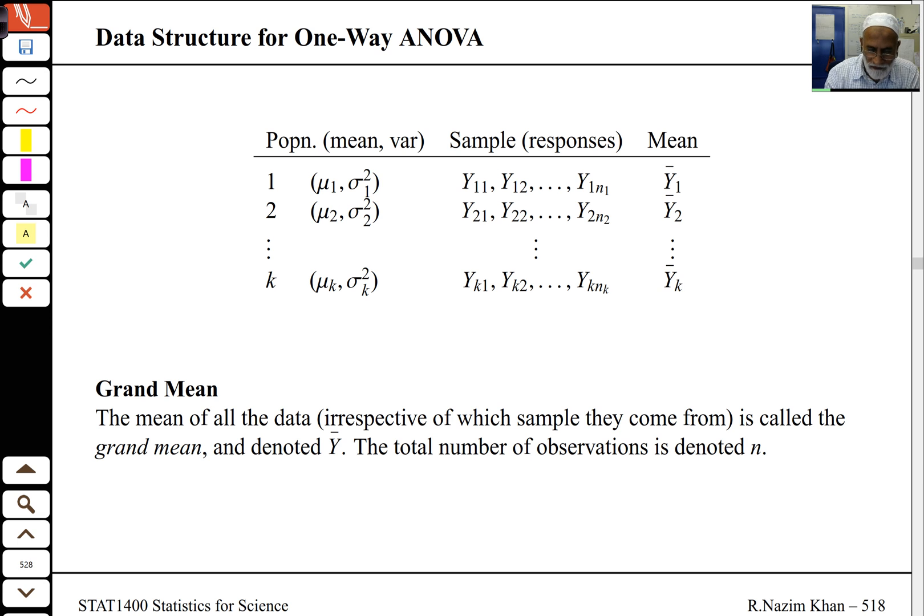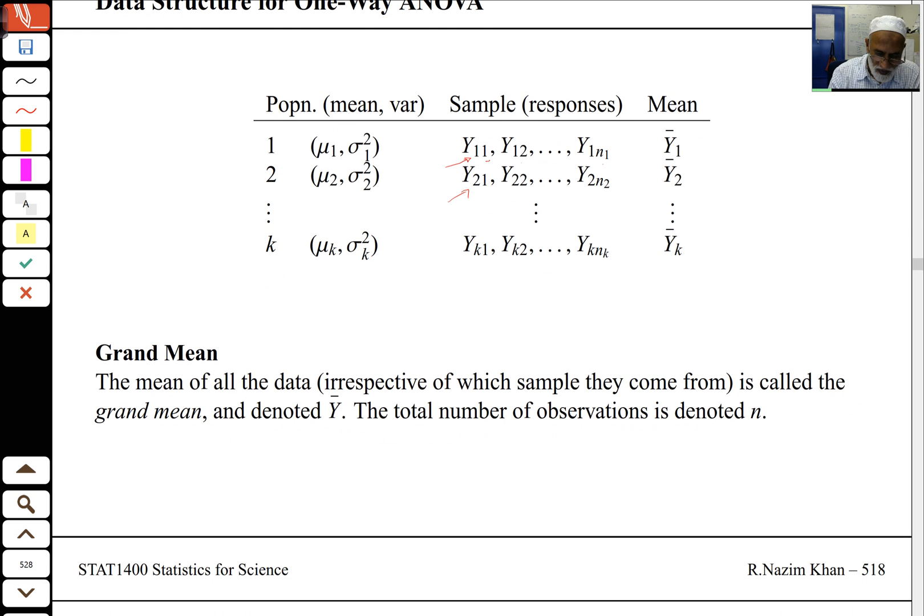Here are my k samples. That's the first sample, y11, y12. The first index here will represent the population and the second observation. This is the first observation, second up to n1, and the mean is y1 bar. Similarly for the second sample, I've got observation 1, 2 up to n2, and the mean is y2 bar, and so on. The grand mean is denoted y bar, and this is the mean of all of this. The total number of observations n is going to be equal to the sum of the observations in each sample, n1 plus n2 up to nk.